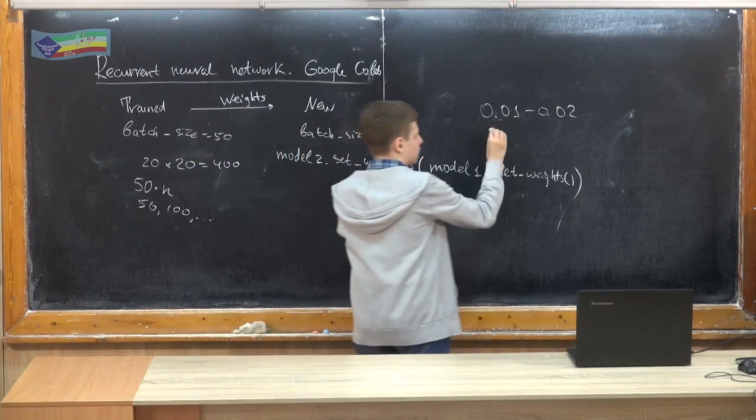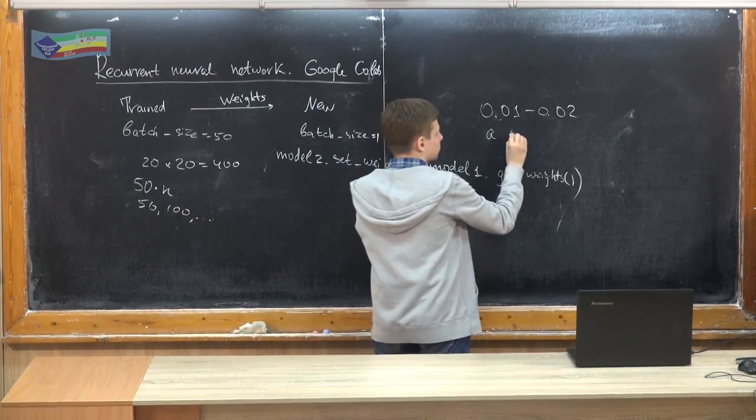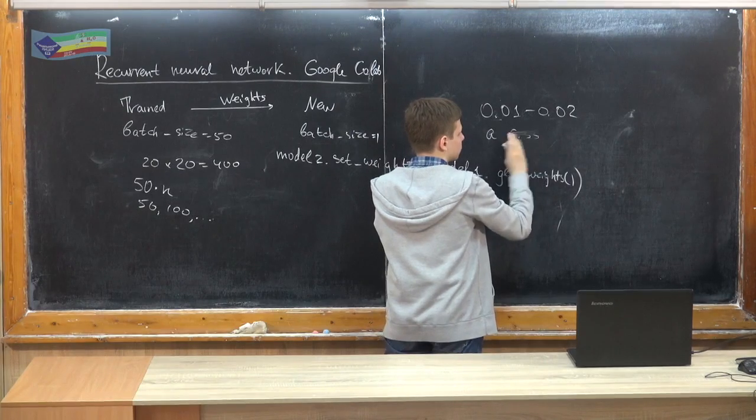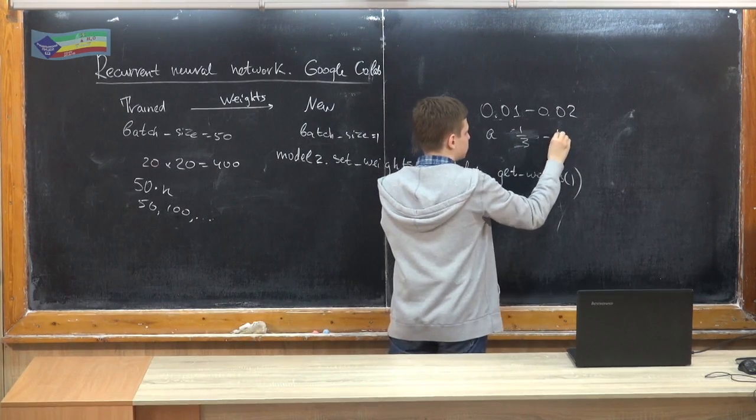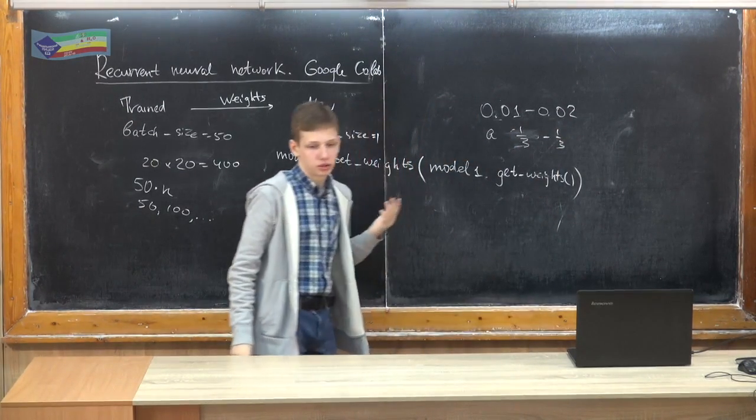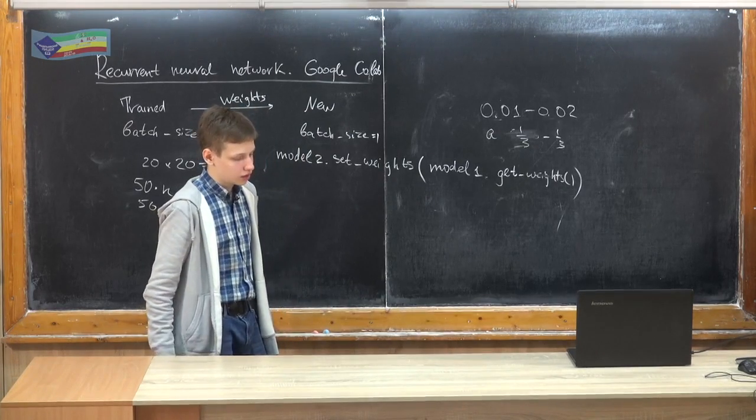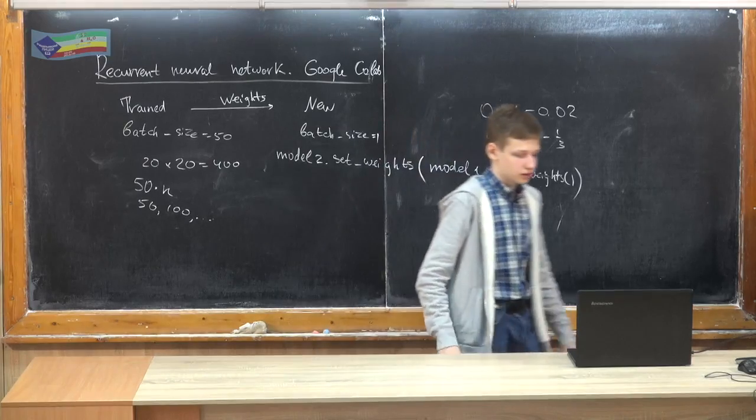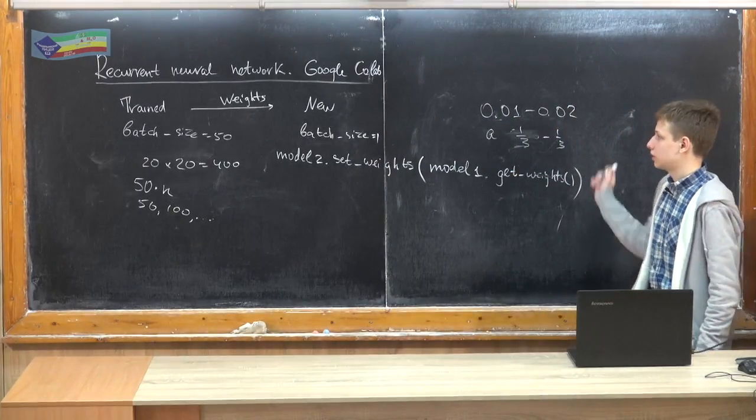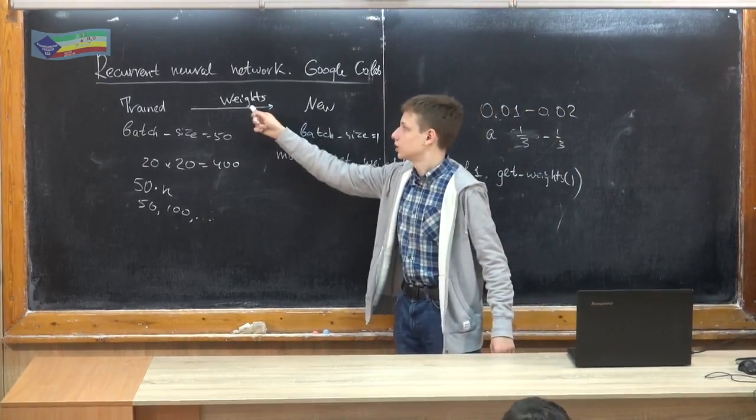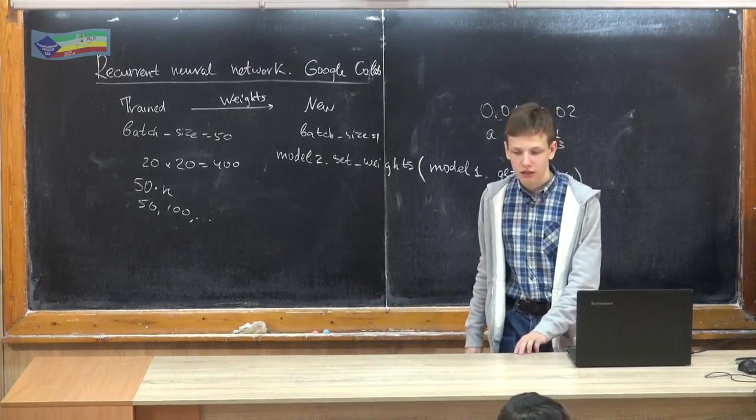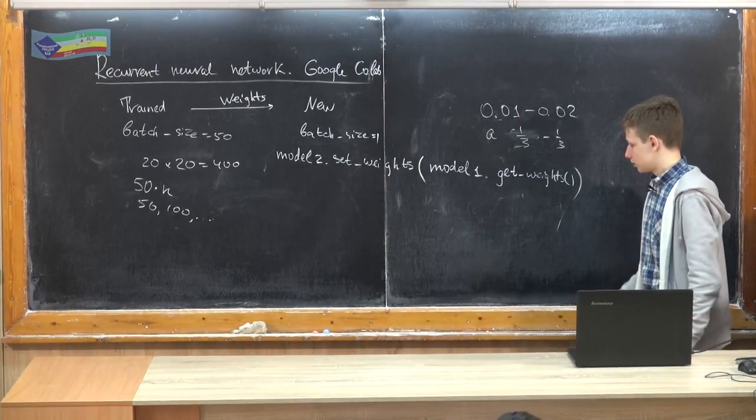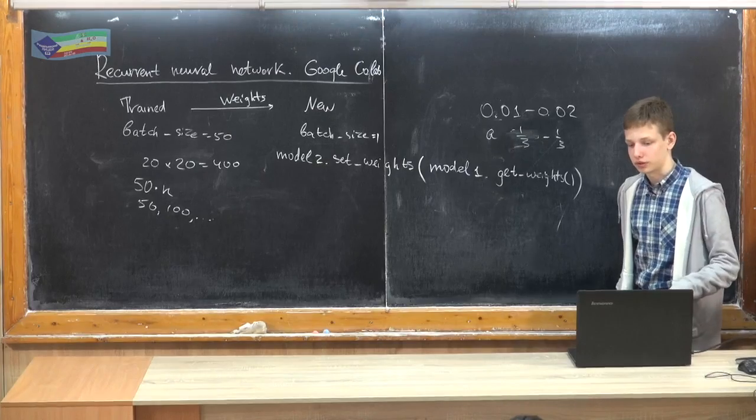Because all coefficients are between 0, one third and minus one third, it's quite precise with an error of like 3%. So this neural network, even after transferring weights, works as intended and is good at getting these parameters from parabolas.